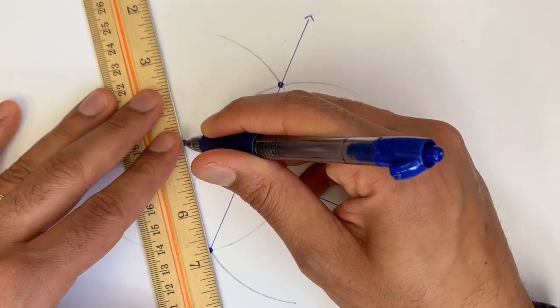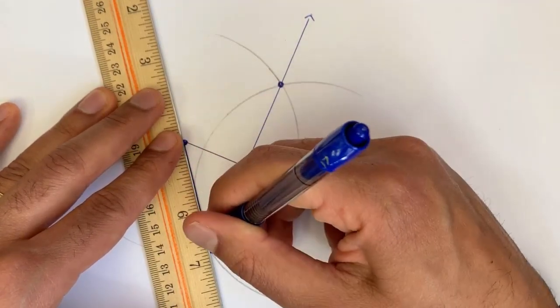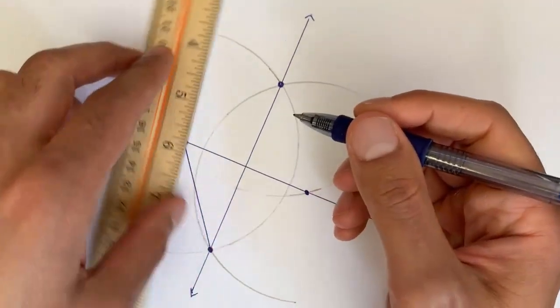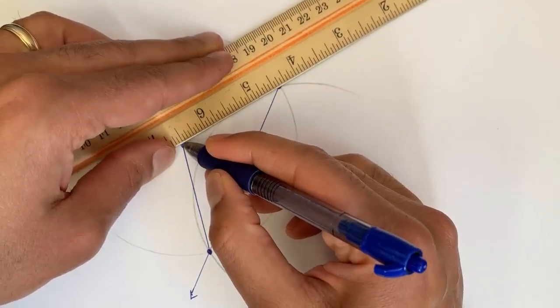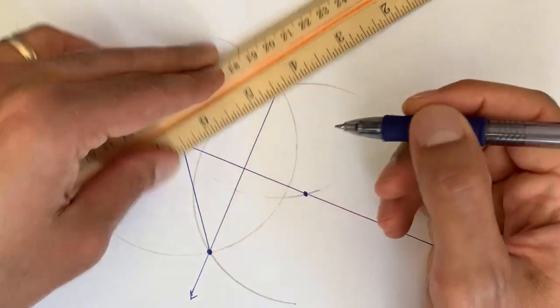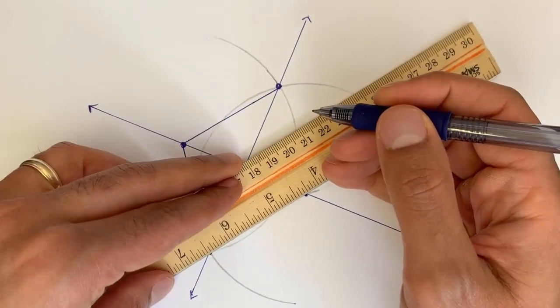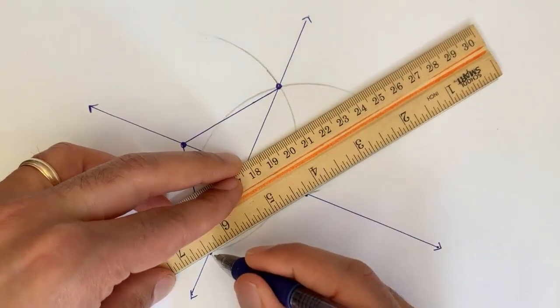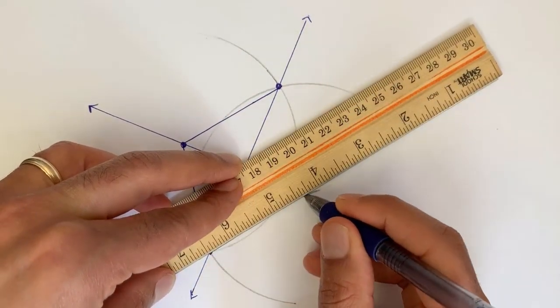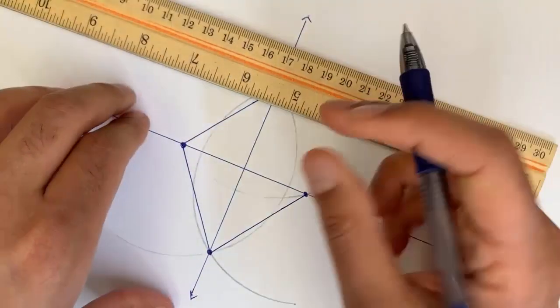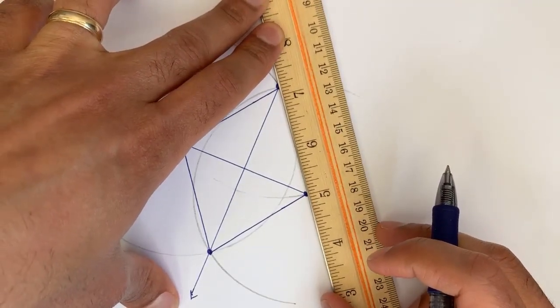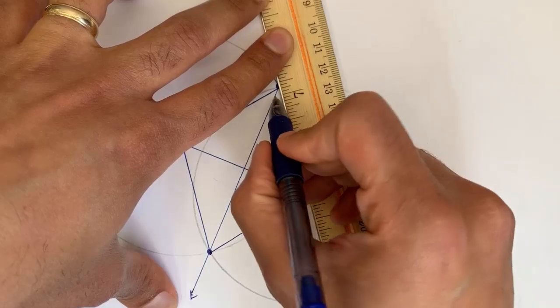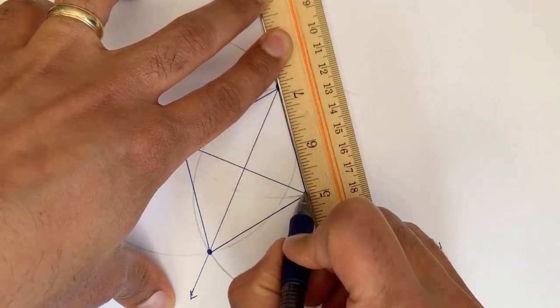We know that this distance is the same as this distance, the same as this one right over here, which is the same as this distance. Let me make sure I get my straight edge right. Same as that distance, which is the same as this distance. Same as that distance.